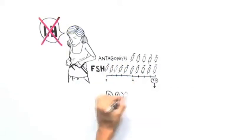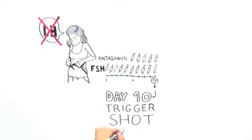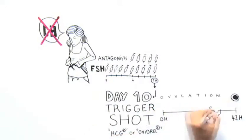On day 10, a trigger shot called HCG or Ovidrel is used to mature the eggs. The eggs will be released by 42 hours, but the retrieval occurs at about 34 hours.